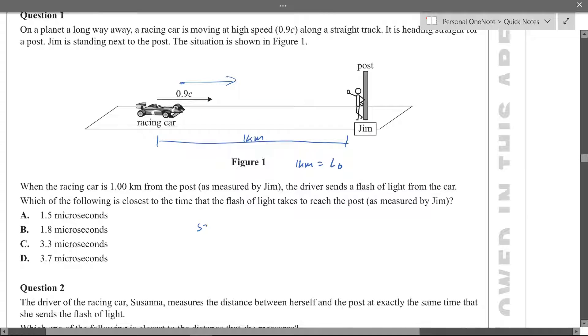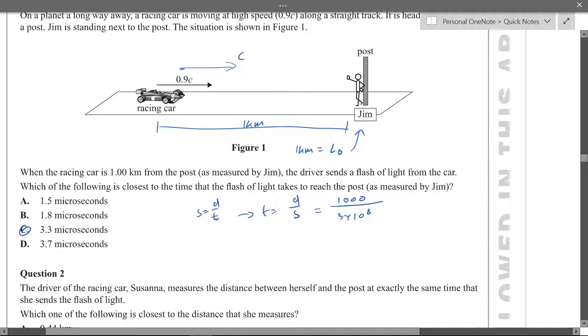So speed equals distance over time, time equals distance over speed. Since it's by Jim, the distance measured by Jim is a thousand metres because it's one kilometre. The speed of light, once it leaves the car, the speed of light will be c. So the speed is 3 times 10 to the 8 and if you put that into your calculator you get, and that's pretty much it for that question.